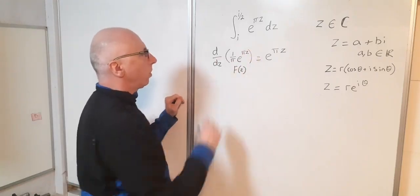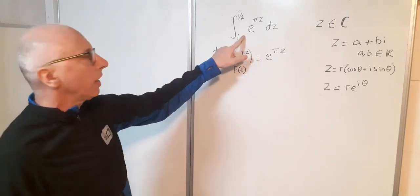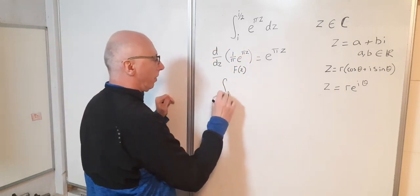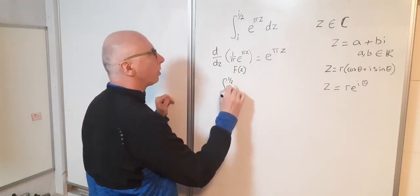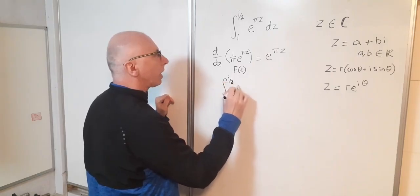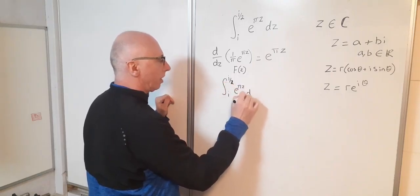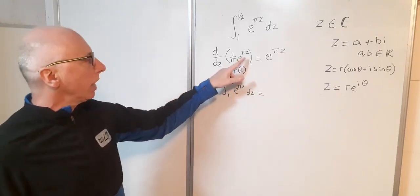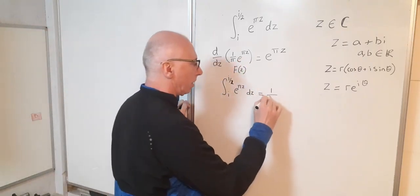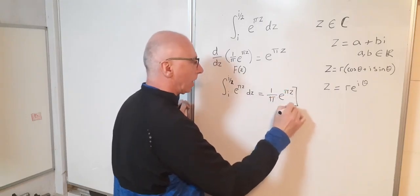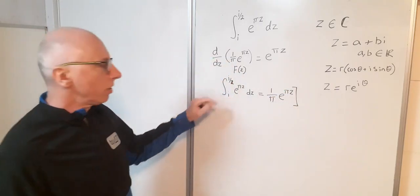So therefore my integral of e to the pi z, integral from i to i over 2 of e to the pi z dz, that equals 1 over pi e to the pi z. And then that will be calculated from i to i over 2.